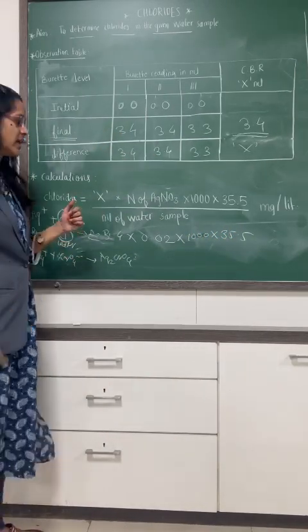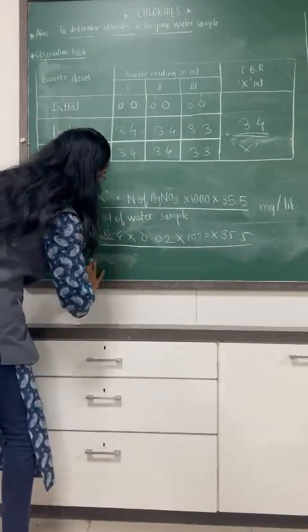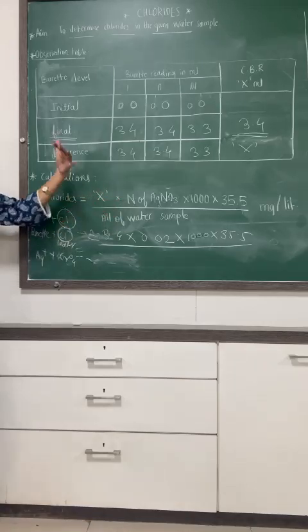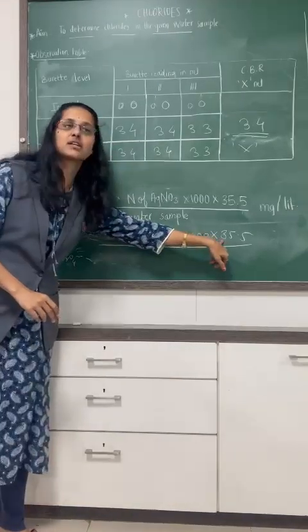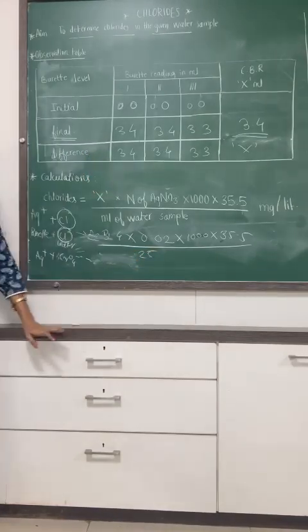All quality parameters we are calculating are equivalent to CaCO3, but here we are calculating for chlorine gas. So we have used here 35.5 divided by 25 ml of water sample.